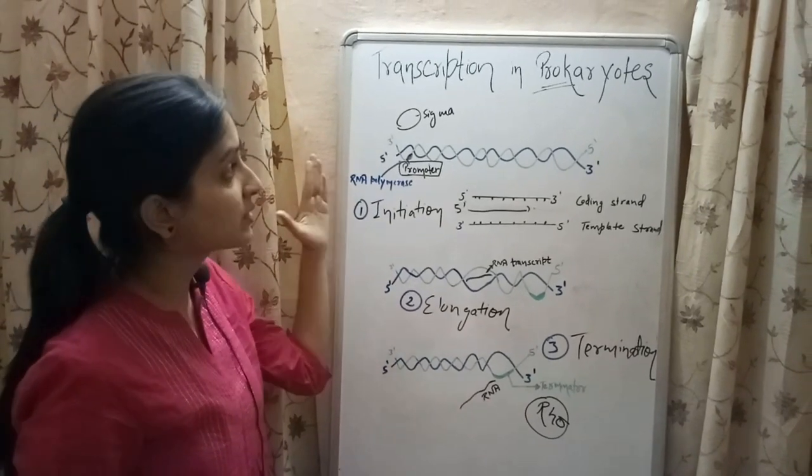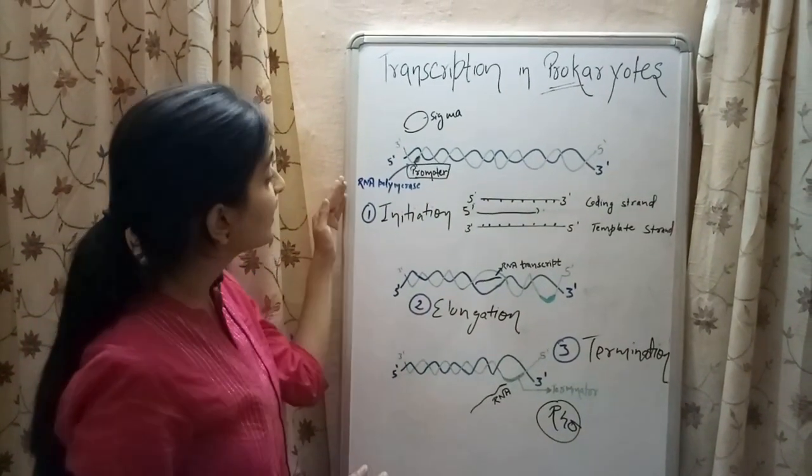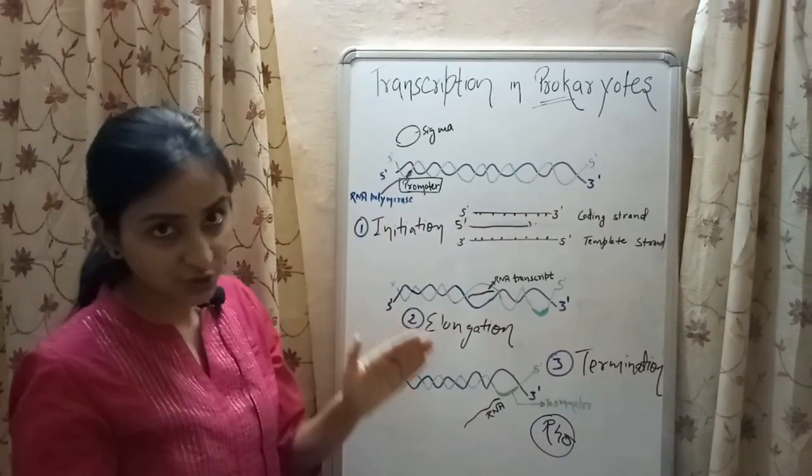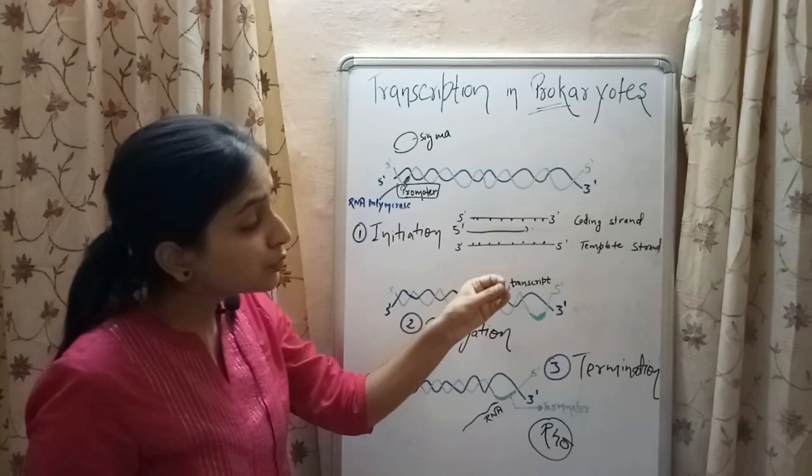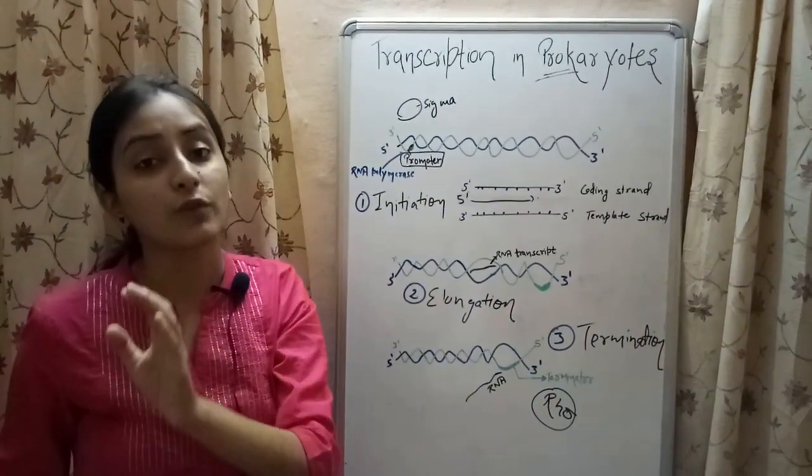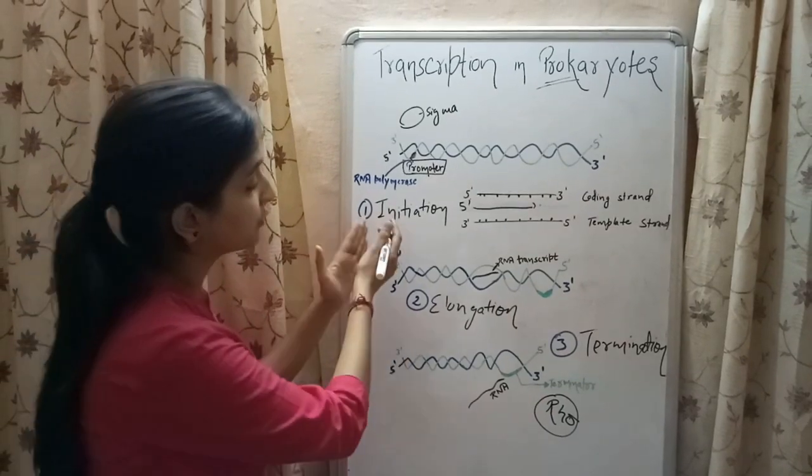RNA polymerase, the enzyme responsible for transcription, gets attached to the promoter region and separates the two strands of DNA, providing the template strand through which the genetic information is copied, leading to the formation of RNA molecule. This step is known as initiation.